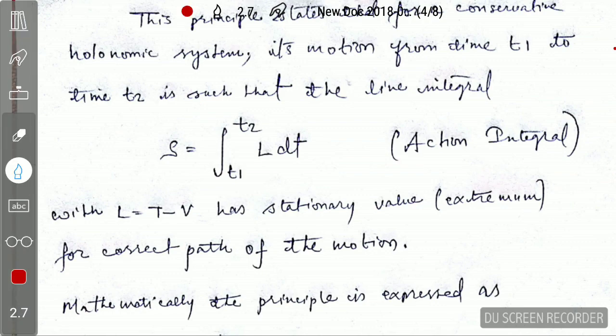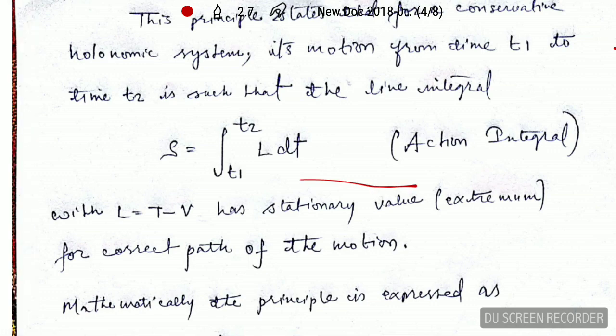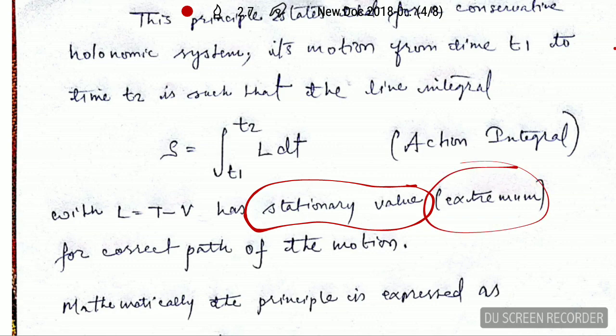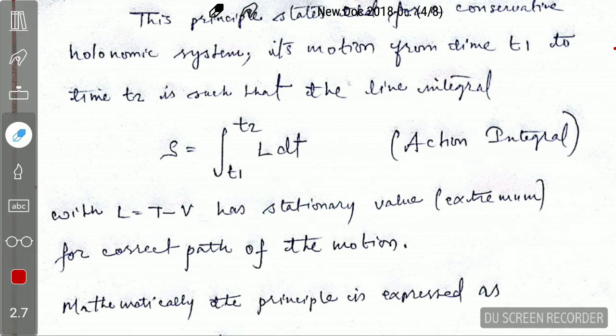The next thing to explain is what we mean by stationary value. Stationary value means constant — it is the value which does not change, or it is the minimum possible value. So extremum stands for the minimum.